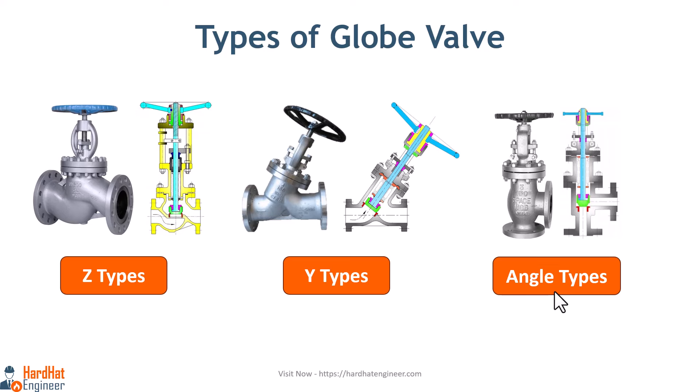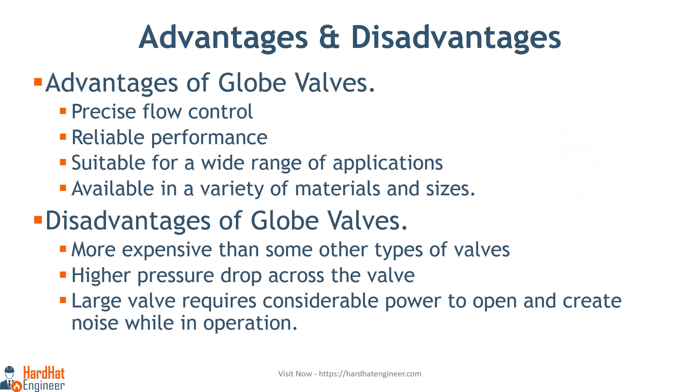Globe valves are used in a wide range of applications in process piping systems, including controlling the flow of liquids, gases, and vapors. They are also used for isolating equipment for maintenance or repair and regulating pressure and flow. There are several different types depending upon body and disc design, such as Z-type, Y-type, and angle types.